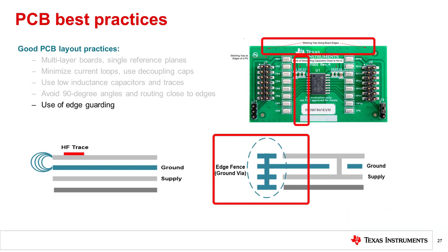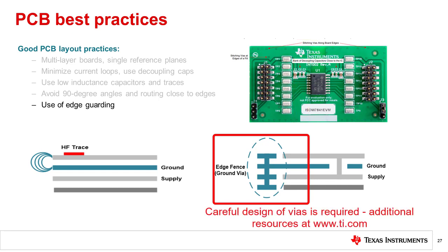Use of vias requires careful consideration of placement, including minimum distances to avoid crosstalk, and techniques to maximize the effective use of guard rings. For a thorough explanation of via usage and placement, please consult the Digital Isolator Design Guide at www.ti.com.